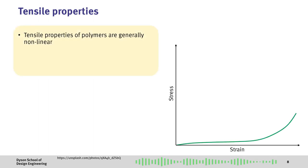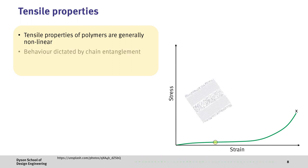In the case of polymers, these tensile properties are generally non-linear. Here, the behavior is largely defined by chain entanglement effects, which means how tangled do the polymer chains get and how easy is it for them to slide past each other.